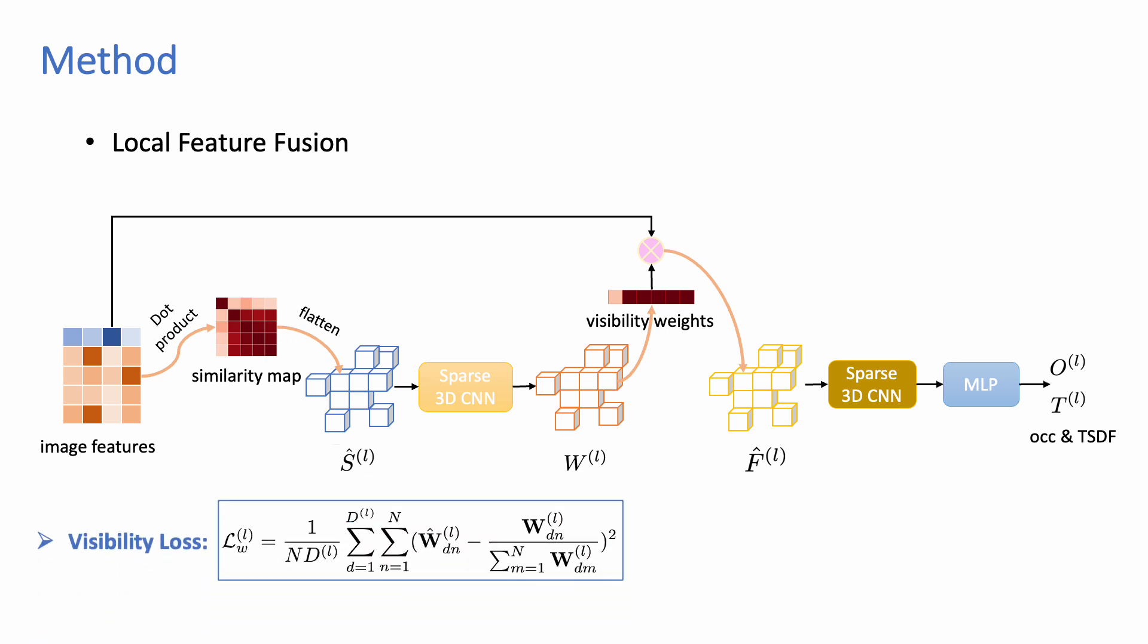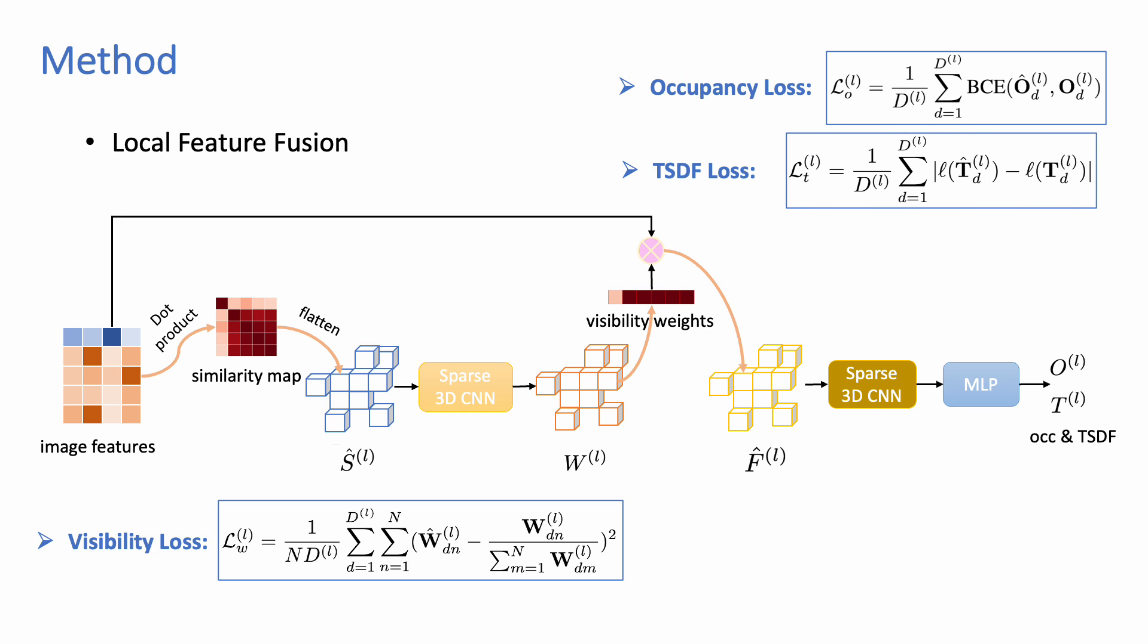The training loss of our visibility is the L2 loss of the ground truth and the predicted visibility weights. The occupancy loss is the binary cross entropy loss of the ground truth and the predicted occupancy, and the TSDF loss is the L1 loss on the log-transformed TSDF estimations.